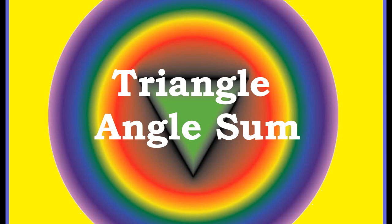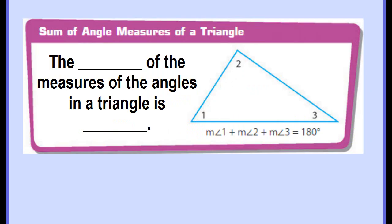Hi Bobcats, it's Ms. Lee and today's lesson is on triangle angle sum. This is a property that states that the sum of the measures of the angles in a triangle is 180 degrees. If you add up all three angles in a triangle, the total will always equal 180 degrees.